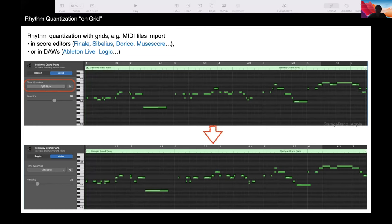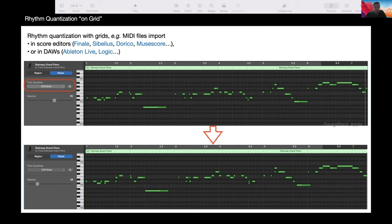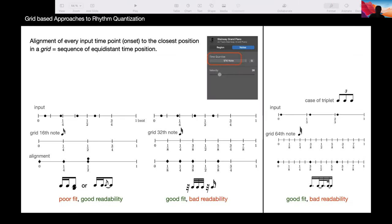A very common approach for this in commercial software, like here GarageBand, is to use a grid. The grid is a sequence of time points which are equally spaced in time. Like here, we have 16 notes for the grid. And when you push in GarageBand this Q button, all the starting points of notes are aligned to 16 notes. This is very easy to implement efficiently, but sometimes it does not give the expected results.